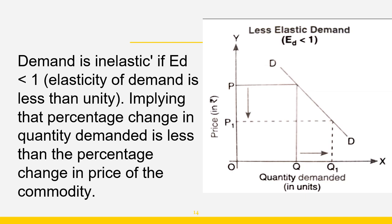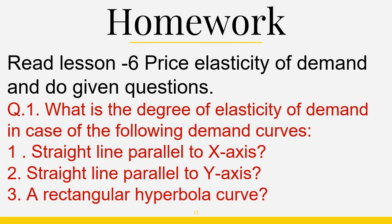Demand is inelastic if elasticity of demand is smaller than 1, meaning percentage change in quantity demanded is less than percentage change in price. In this case, the change in quantity demanded is less in comparison to the percentage change in price. These were the different degrees of elasticity of demand — distinct situations where elasticity of demand equals 0, infinity, 1, less than 1, or greater than 1.